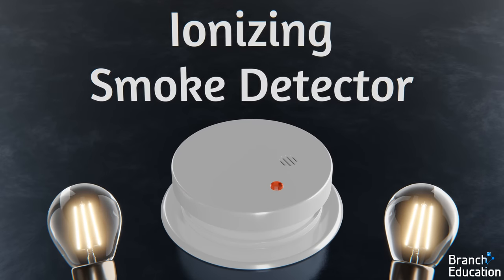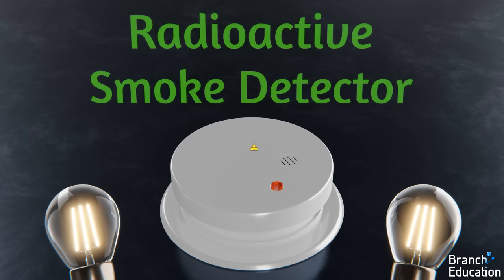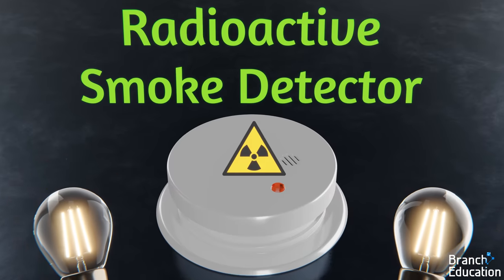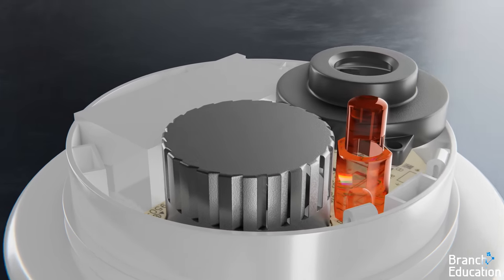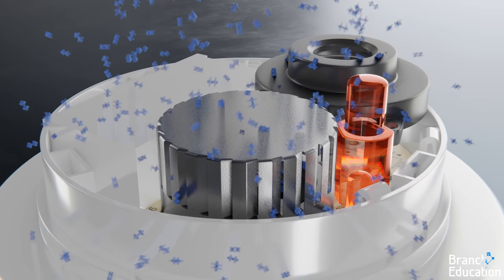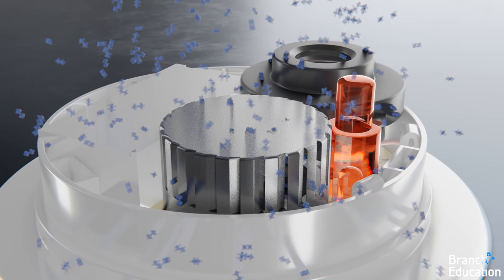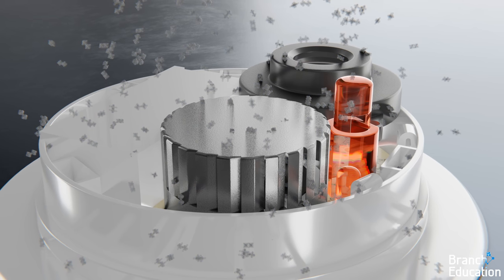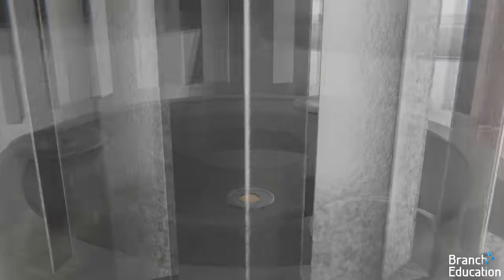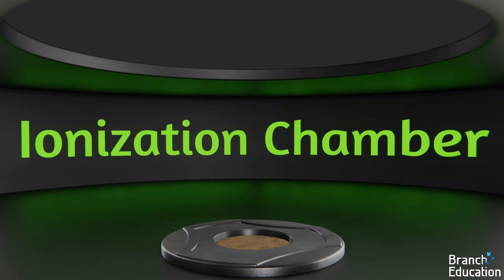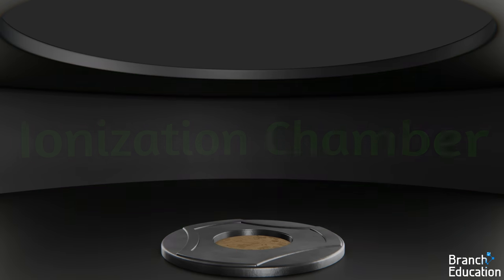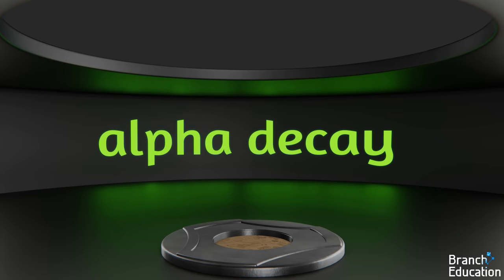By the way, whoever marketed these radioactive smoke detectors as ionizing smoke detectors is a genius. Because, let's be honest, no one would ever buy a radioactive smoke detector. But we digress. Outside of this device, these electrons and positively charged atmospheric ions would eventually recombine and become neutral. However, in this contraption called an ionization chamber, we want to use alpha decay to help us detect smoke.